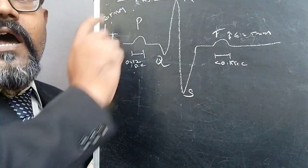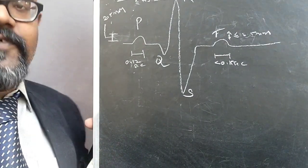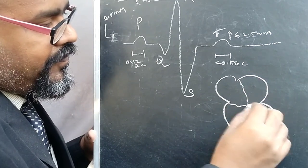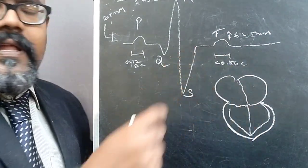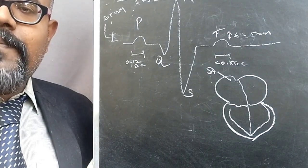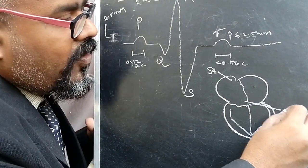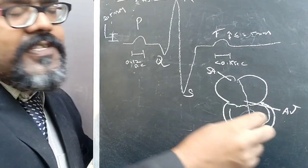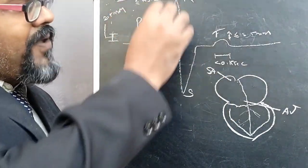Now we discuss how the PQRST waveform is generated. Recalling the function of the heart: there are two auricles at the top and two ventricles at the bottom. The sinoatrial node is the natural pacemaker, where natural pulses are generated. These pulses transfer to the atrioventricular node. We are going to discuss how the P waveform is generated first.